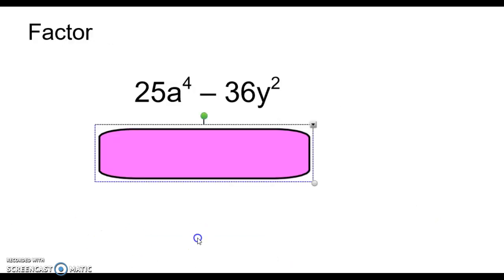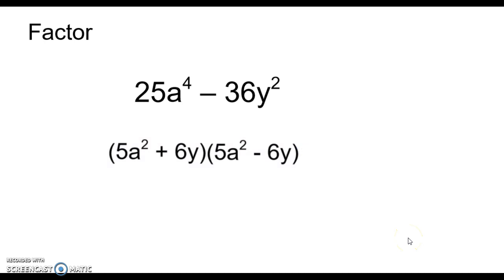Alright, let's try this one. To factor this one, this is a special case. There's two terms with a minus sign. Everything is perfect squares, so this is called the difference of two squares. That's how you would factor this one.